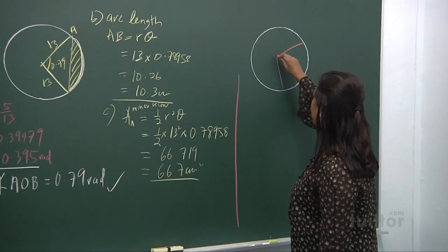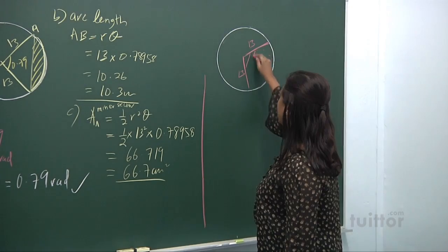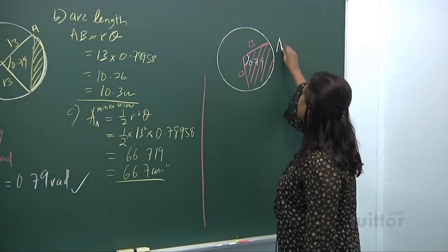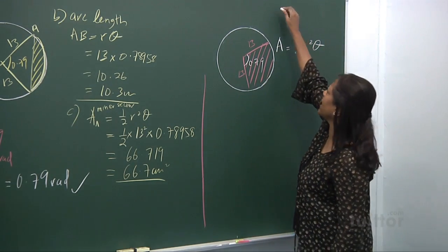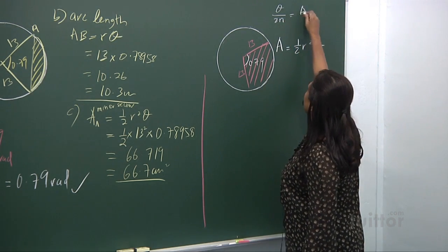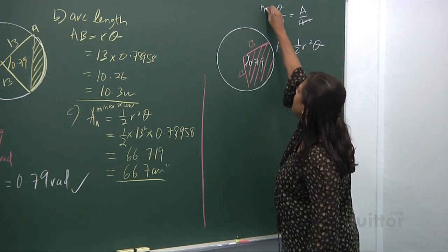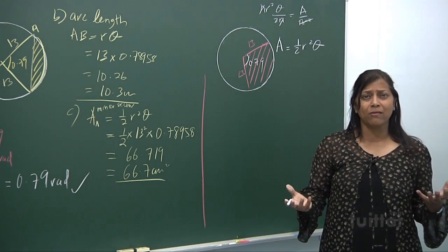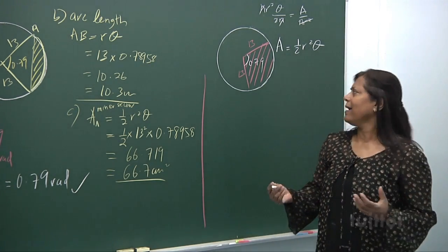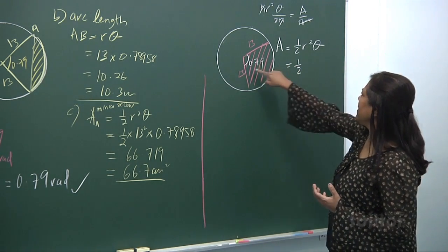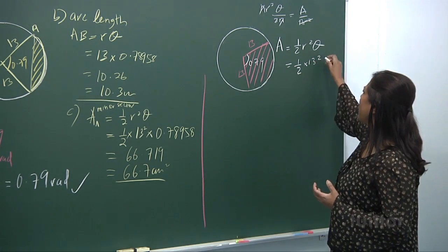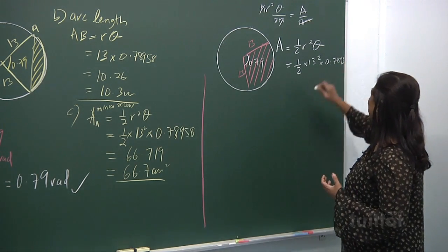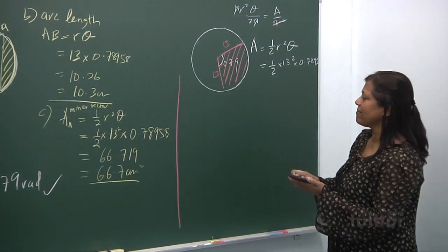For this triangle with sides 13 and 13 and included angle 0.790 radians, we use area of triangle equals half R squared sine theta. Your angle must be in radians — that's 13 squared and theta is 0.7895.